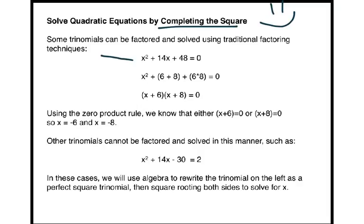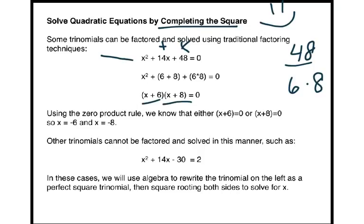For instance, x squared plus 14x plus 48. We ask ourselves, what two numbers multiply to equal 48 that add to equal 14? If you make a factor table for 48, you will quickly see that the numbers that multiply to equal 48 and add to make 14 are 6 and 8. Thus, we have found our solution: x plus 6 times x plus 8.